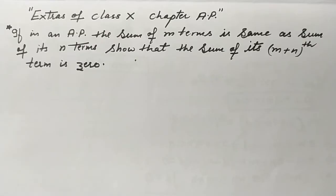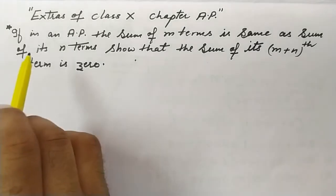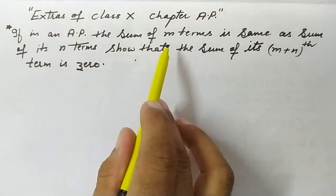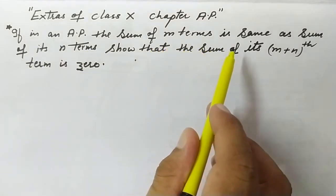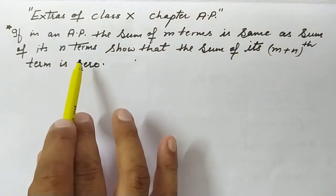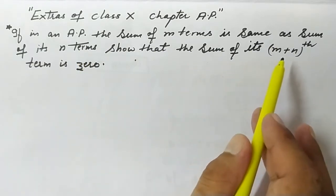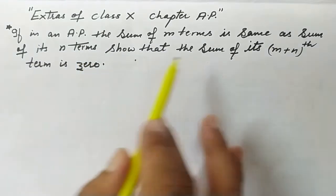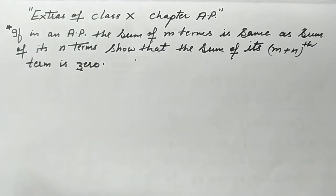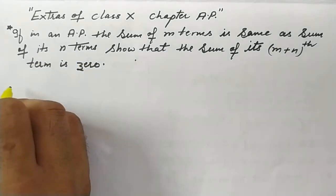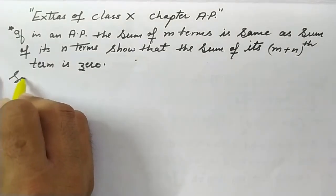Welcome to this YouTube channel. Let's do some extras of Class 10, Chapter AP. The question is: in an AP, the sum of m terms is the same as the sum of its n terms — show that the sum of its (m+n)th term is zero. Let's see what is given in this question.